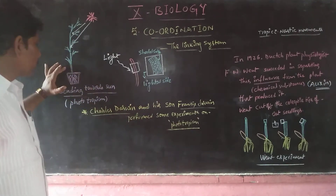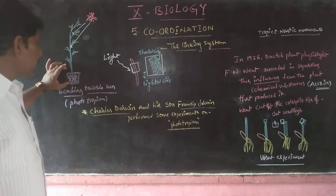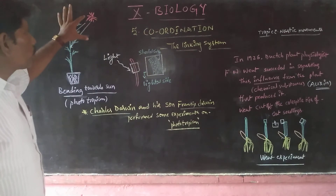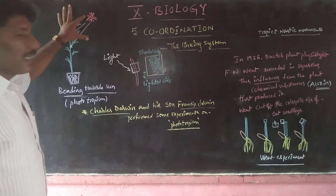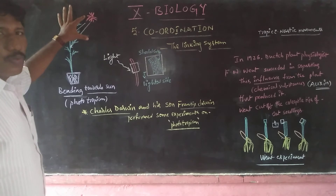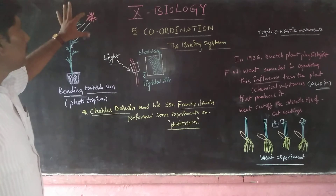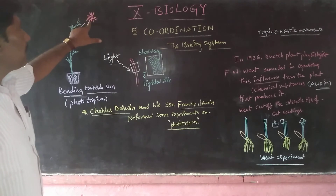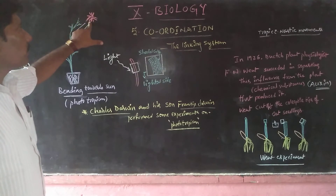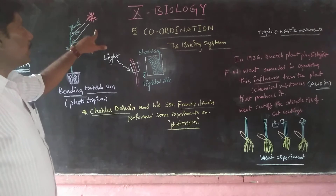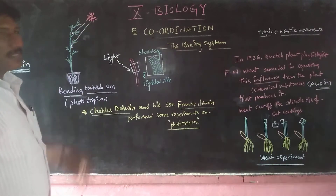Charles Darwin and his son Francis Darwin observed that plants bend towards the sun. How does the plant bend towards the sun? The sun is a directional stimulus and the plant responds accordingly.